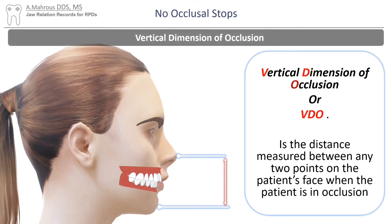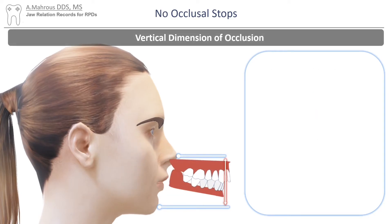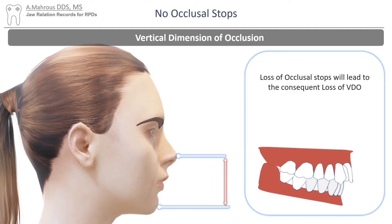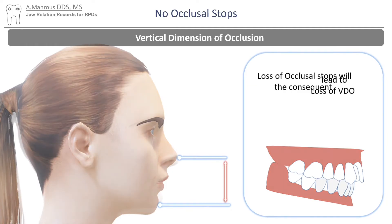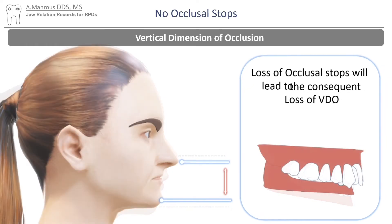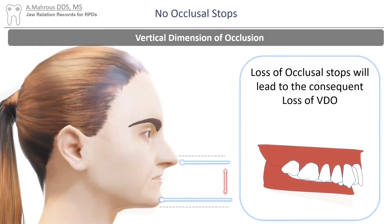Vertical dimension of occlusion, or VDO, is the distance measured between any two points on the patient's face when the patient is in occlusion. If the patient were to lose their posterior teeth that provide occlusal stops, they would automatically lose vertical dimension.